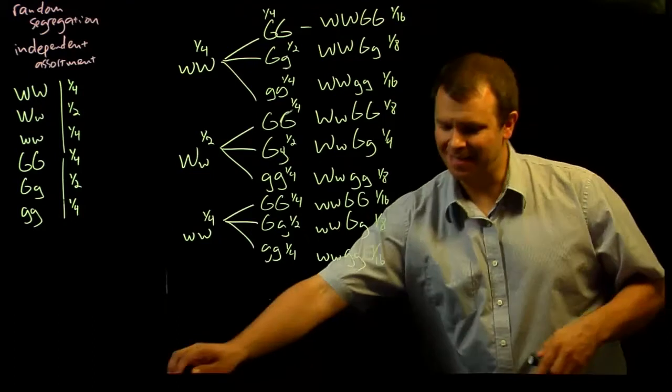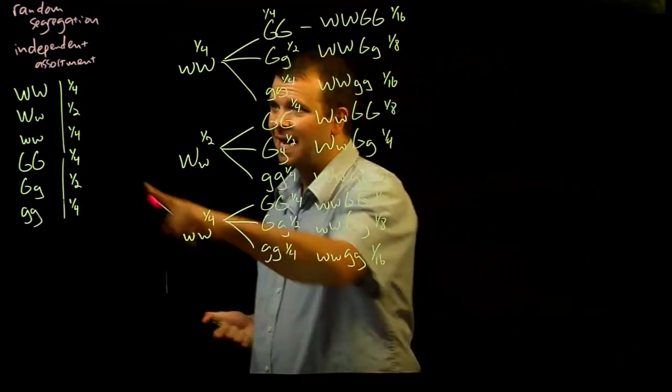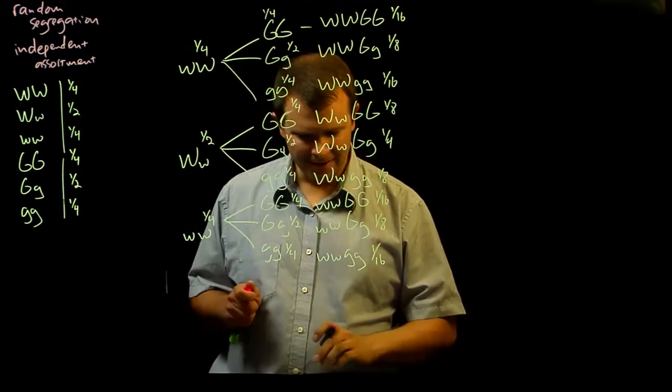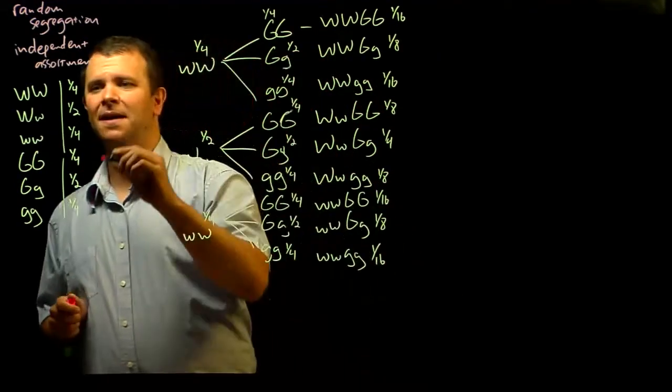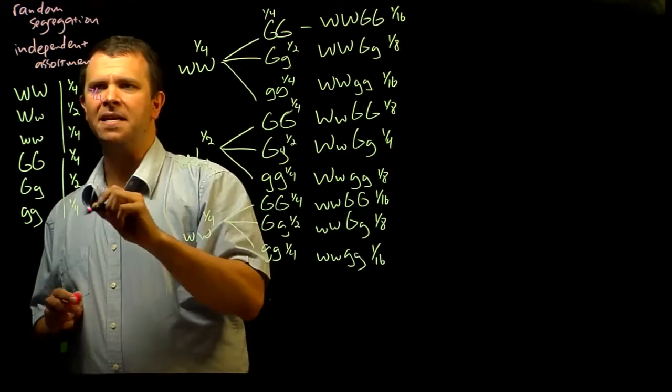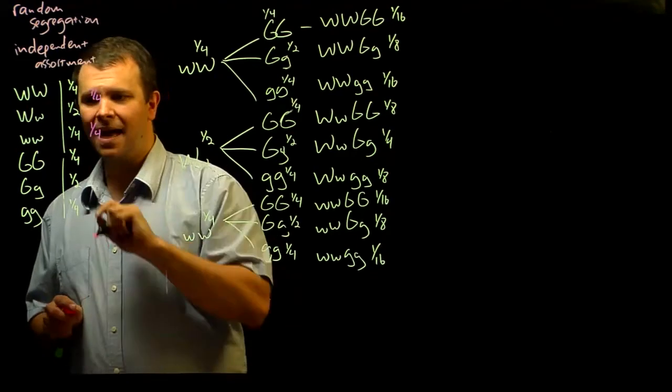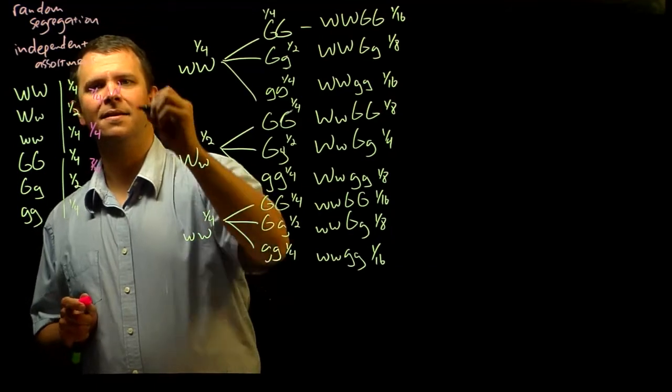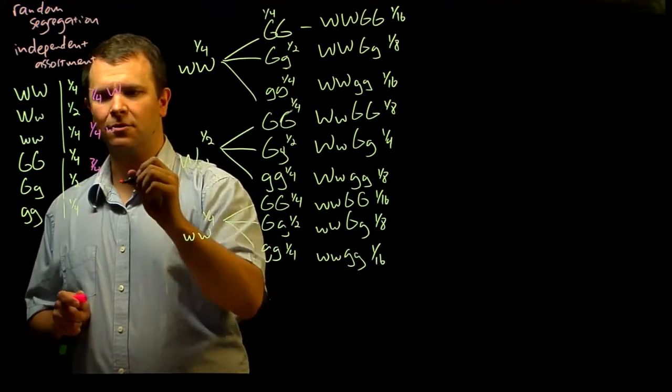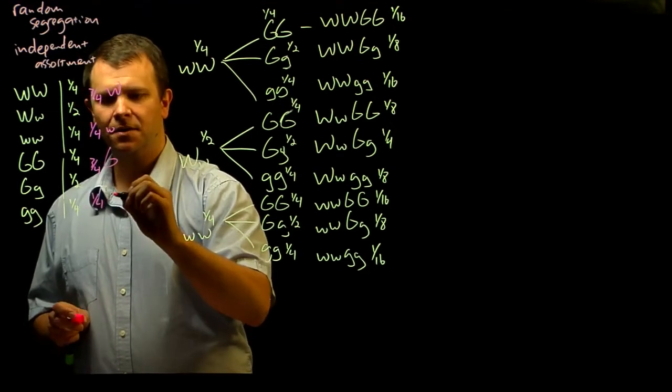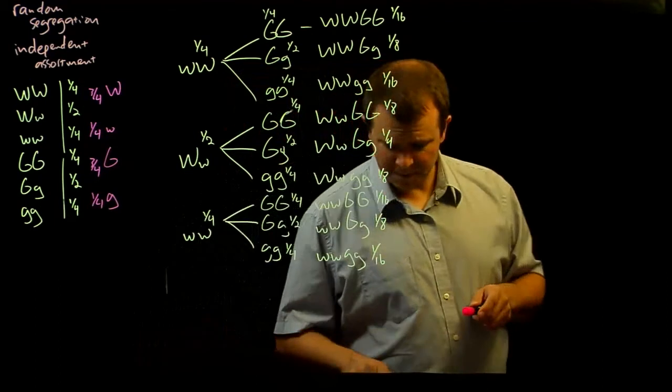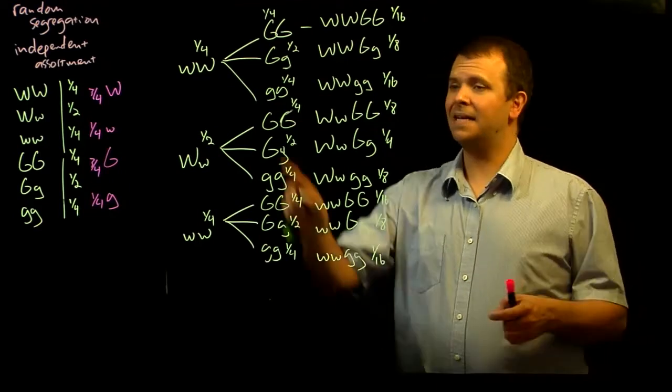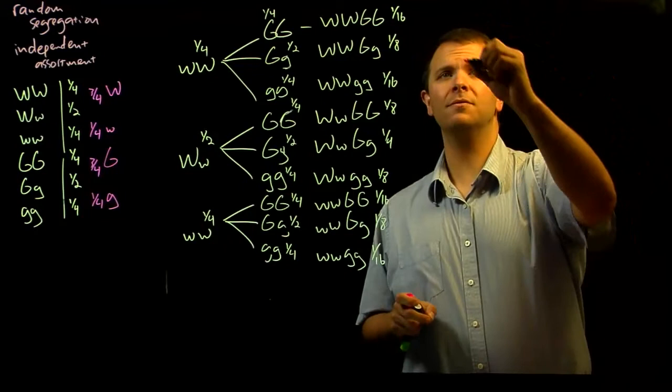You can also treat phenotypes this way. We expect the phenotypes of this cross to be three quarters round and one quarter wrinkled, and three quarters yellow and one quarter green. And so similarly, again, because these events are independent, we can set up a similar tree to this. It's a little bit shorter, which is nice.